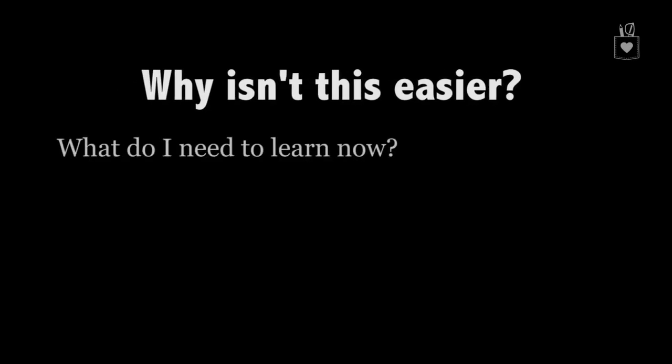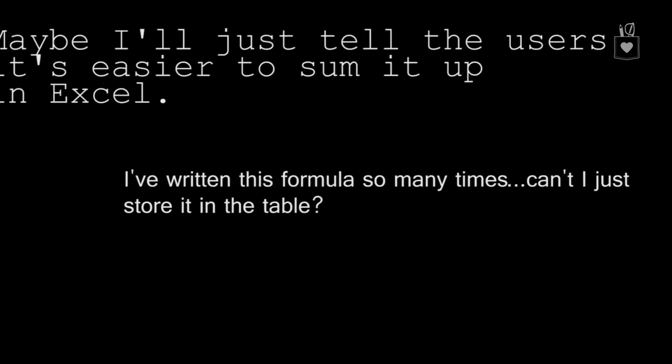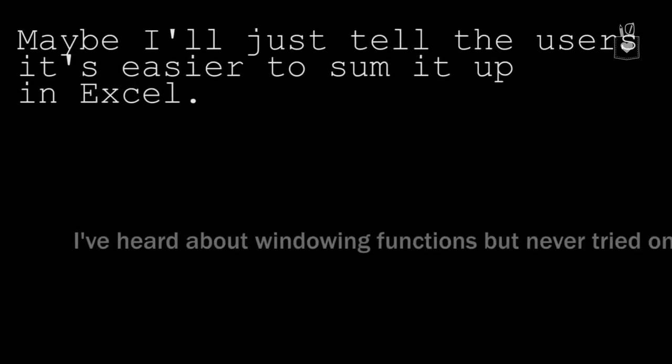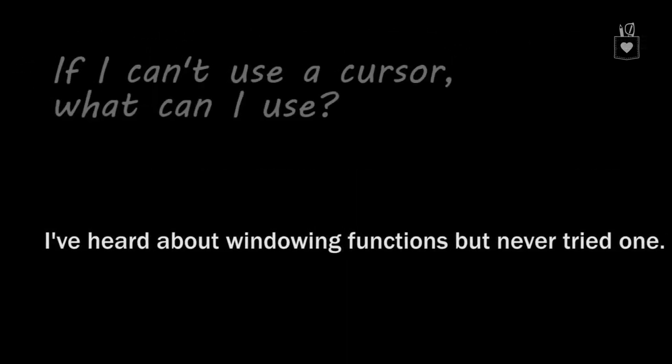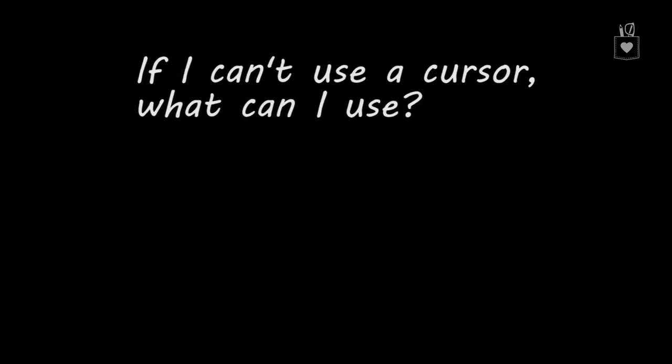Why isn't this easier? What do I need to learn now? This code keeps getting longer and uglier. I've written this formula so many times. Can't I store it in a stored procedure? Maybe I'll just tell the users it's easier to sum it up. I've heard about windowing functions, but we've never tried one. If I can't use a cursor, what can I use? How do other people code to solve this problem? There must be a better way.